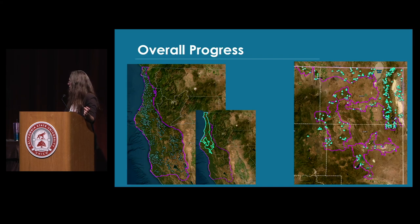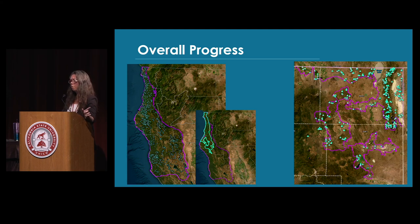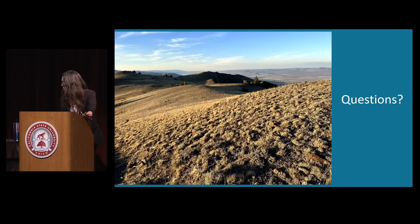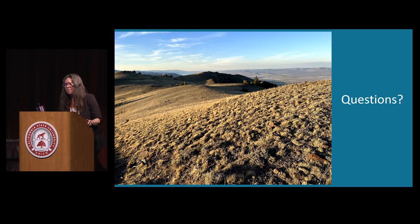Between these two projects — the North Coast and the MoDoc — we've added over 3,100 rapid assessment and releve surveys to inform our state's vegetation classification. We'll be adding over 5 million acres of fine-scale mapping. This is getting us another step closer to completing our goal of getting the entire state classified and mapped. Thank you, and we have time for questions.